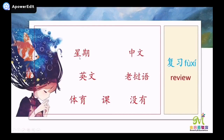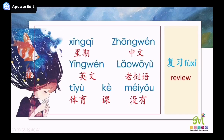Read it: 星期, 中文, 英文, 老挝语, 体育, 课, 没有。Now with pinyin, read it again and translate. 星期 — week. 中文 — Chinese. 英文 — English. 老挝语. 体育 — PE. 课 — class, lesson. 没有 — not have.